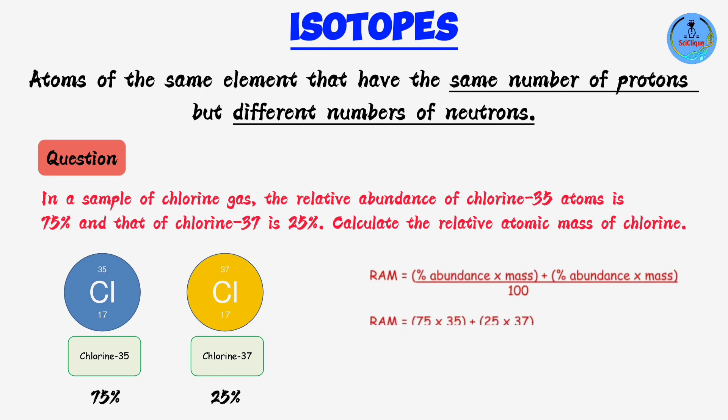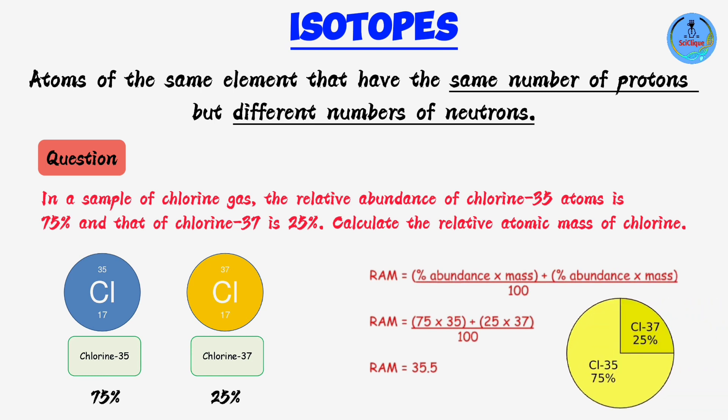Applying the formula: (35 × 75 + 37 × 25) ÷ 100 gives a relative atomic mass of 35.5. Notice that 35.5 is closer to 35, the mass number of the most abundant isotope. This illustrates that the relative atomic mass of an element will always be closer to the mass number of its most abundant isotope.